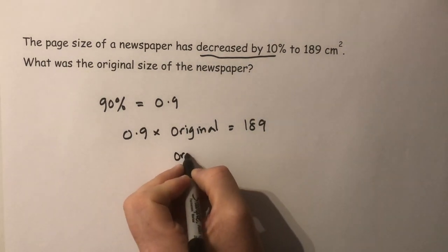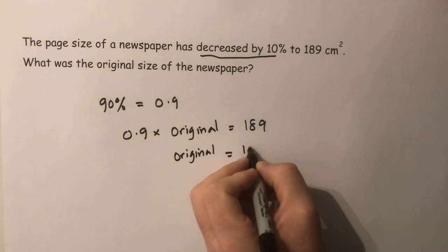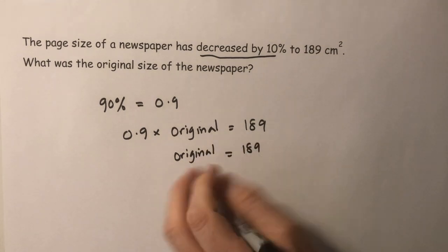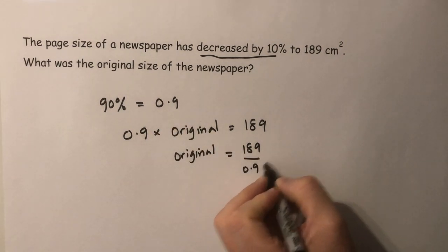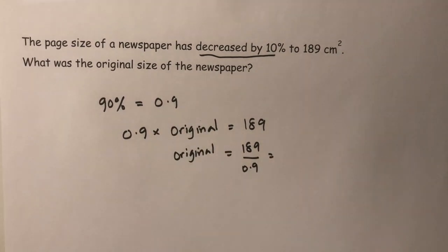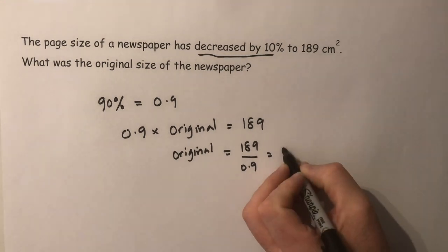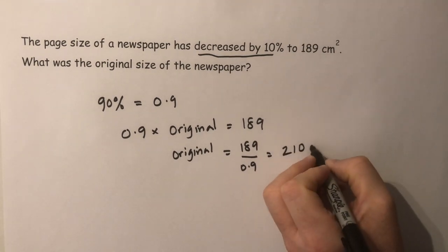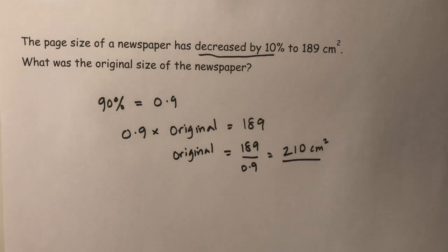So the original value is equal to 189, and the opposite of multiplying by 0.9 is dividing by 0.9. Typed into the calculator, 189 divided by 0.9 equals 210. So it was originally 210 square centimetres.